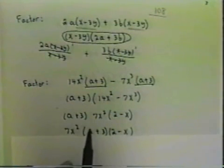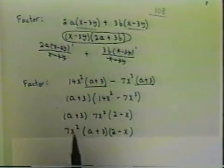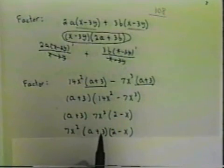Now I might want to turn the answer around and write it as 7x squared times a plus 3 times 2 minus x.